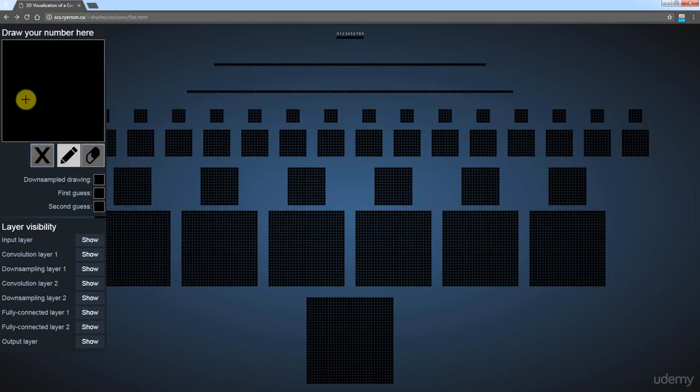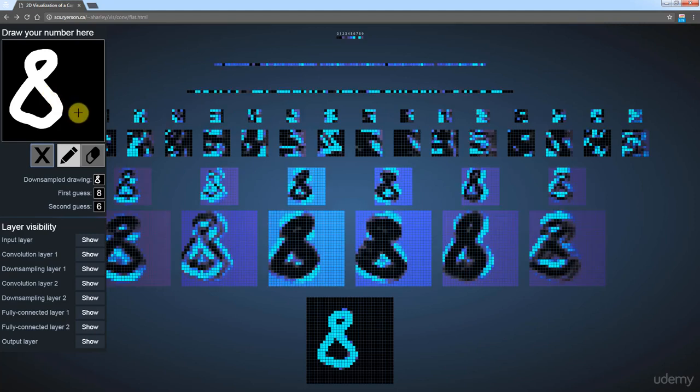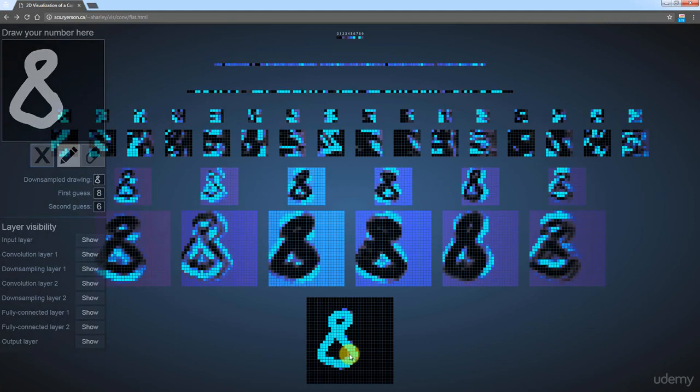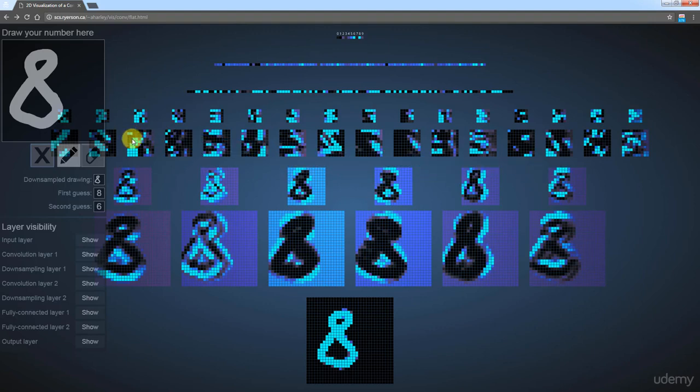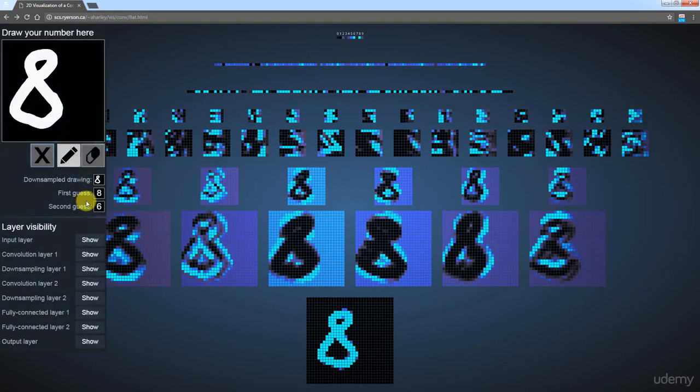Let's do one more. Let's say an eight. I think eights are pretty hard for this. No, picked up an eight. So you can see that it goes into an eight. And then after that, it stops being recognizable. It stops making sense to us humans, right? These features that it's working with. But at the same time, it is correctly recognizing that it's an eight.